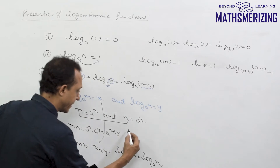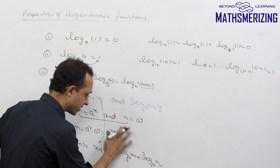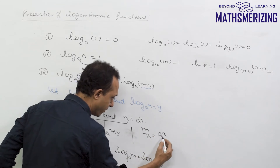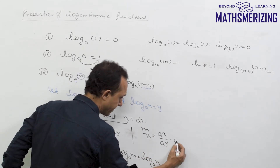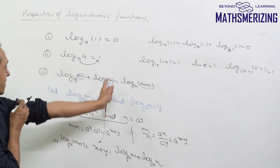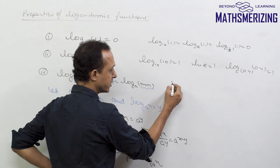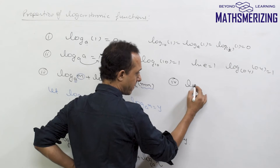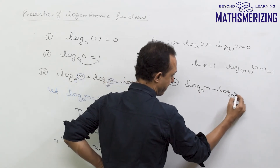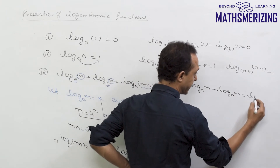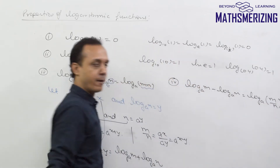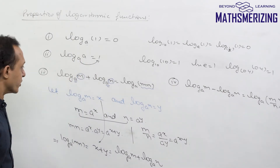Now if we divide m by n, we get m/n equals a to the power x divided by a to the power y, which is a to the power (x minus y). This gives us the fourth property: log m minus log n equals log(m/n).